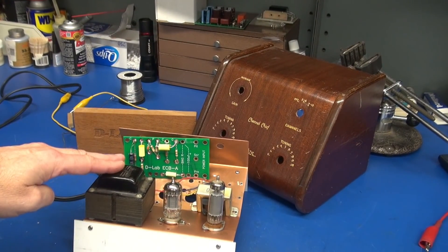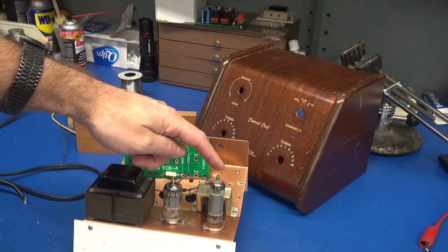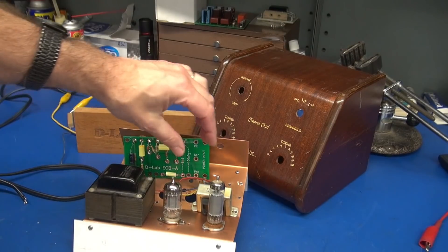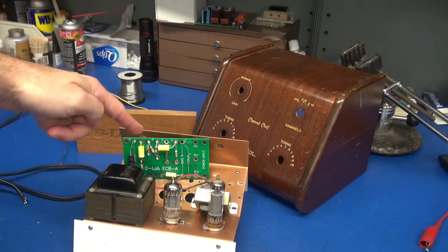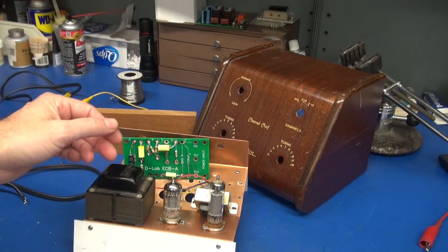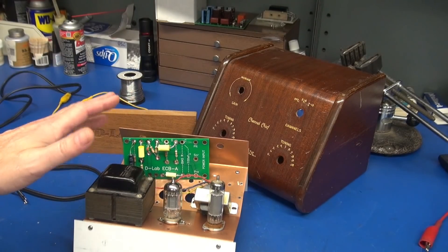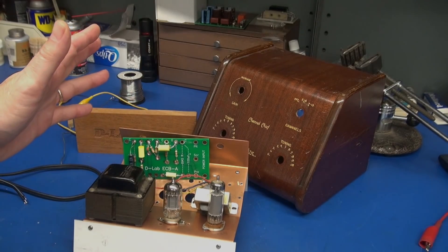Here's the power transformer that we just tested. 6AQ5 output, 12AX7, little 5K output transformer, and the preamp board will go underneath. It's going to be a really cool project. Stay tuned. You'll see it coming up soon.